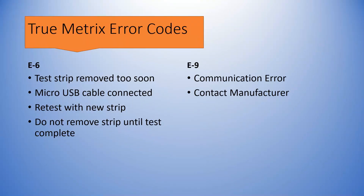E6 means the test strip was removed too soon, so simply retest with a new test strip and ensure the test strip is left in place until the meter has completed the test. The micro USB cable could also be plugged into the side of the meter, in which case it won't test properly — remove the cable and repeat the test.